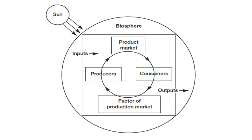In the biosphere, the main source of energy is sunlight. Producers produce biomass, which goes to consumers, and many factors in the market deal with the price of food. This whole system is an ecosystem, and within this ecosystem the economy is a subsystem — there are inputs and outputs that interact with the broader ecological system.